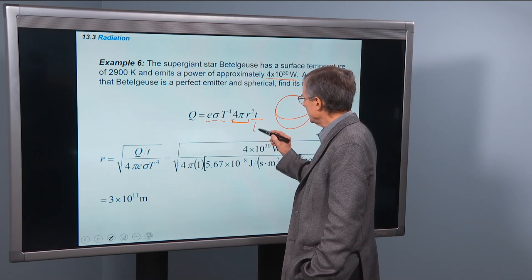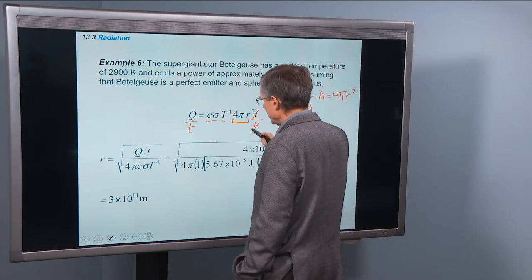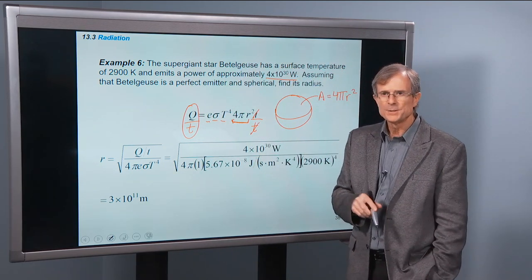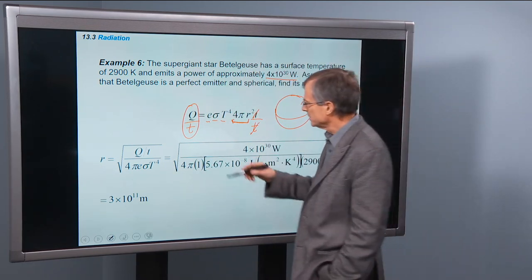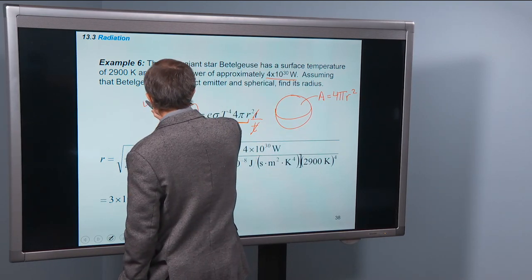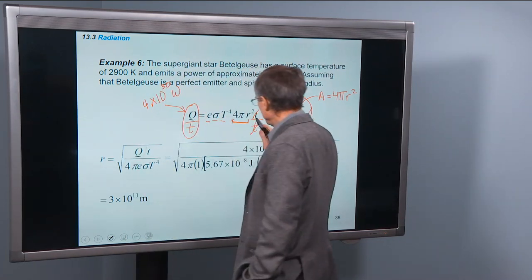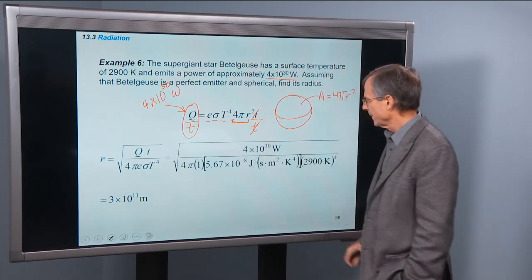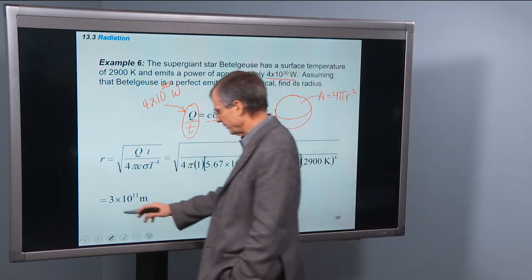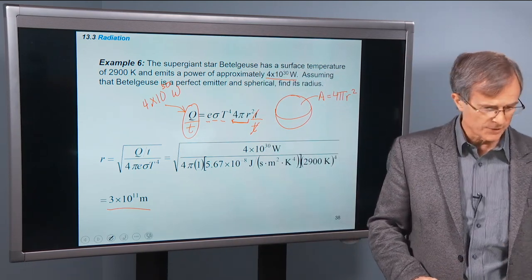Times cancel, and this energy divided by a time is the power in watts. So this Q over t is going to be 4 times 10 to the 30 watts. And then we're going to solve this for r. If you do the algebra, this is what you get: 3 times 10 to the 11 meters is the radius of that star. It's a big star, a red giant star.